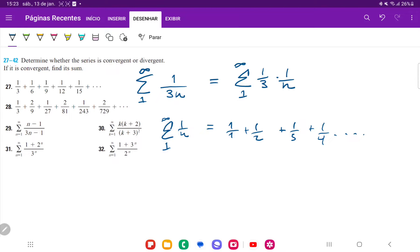So if this diverges, then one-third times this also diverges, right? It's going to be one-third smaller, but it's definitely going to diverge. So the answer is, it diverges because it is the harmonic series. And so that is it for 27.